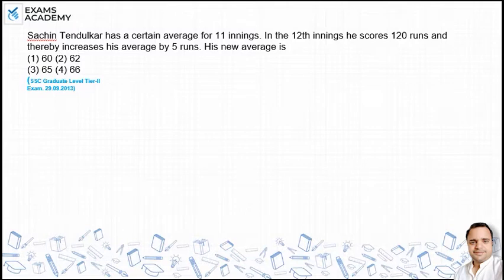Hello friends, I am going to solve this problem. What is the question? Sachin Tendulkar has a certain average of 11 innings. In the 12th inning, he scores 120 runs and thereby increases his average by 5 runs. What is his new average?